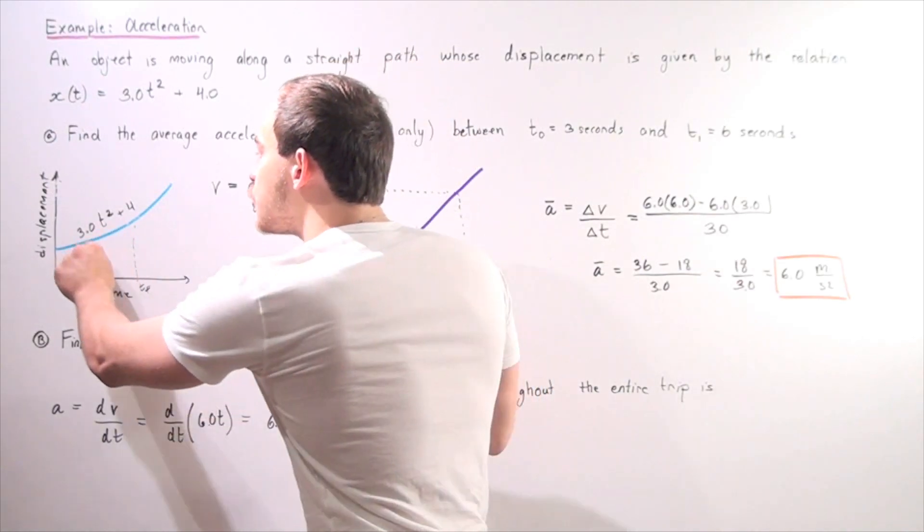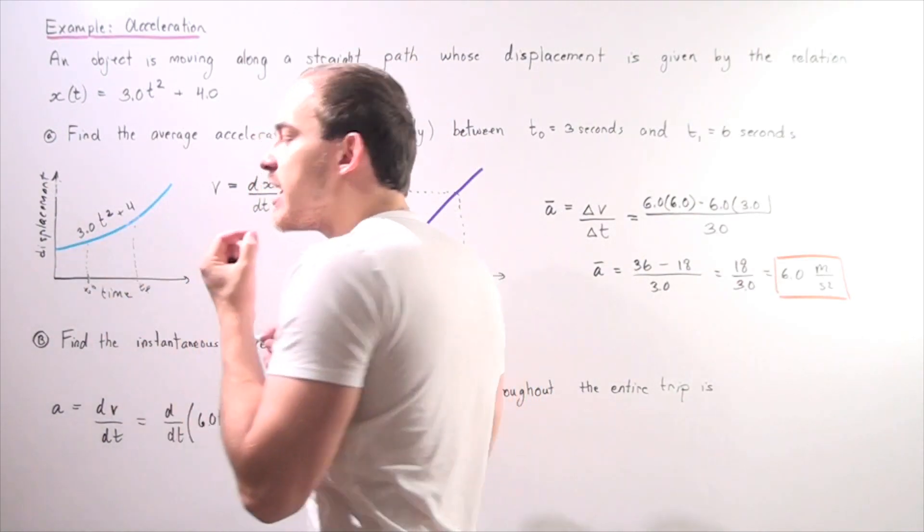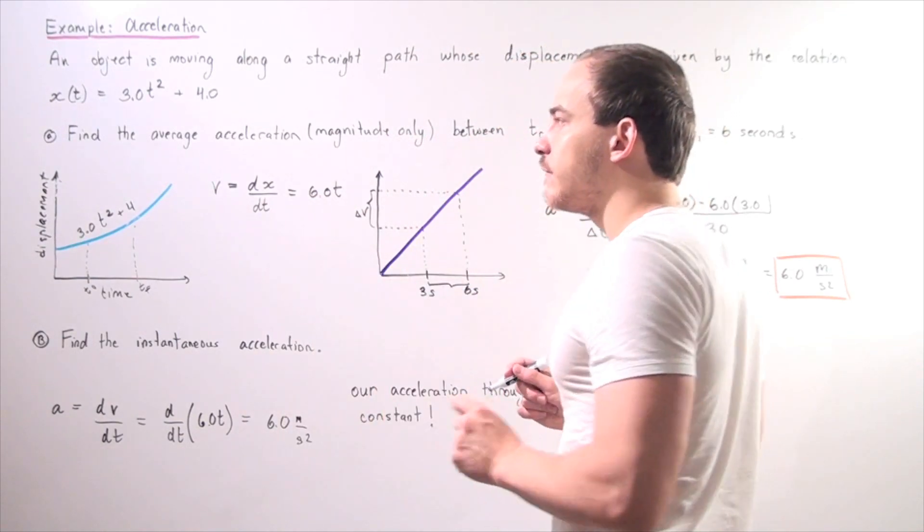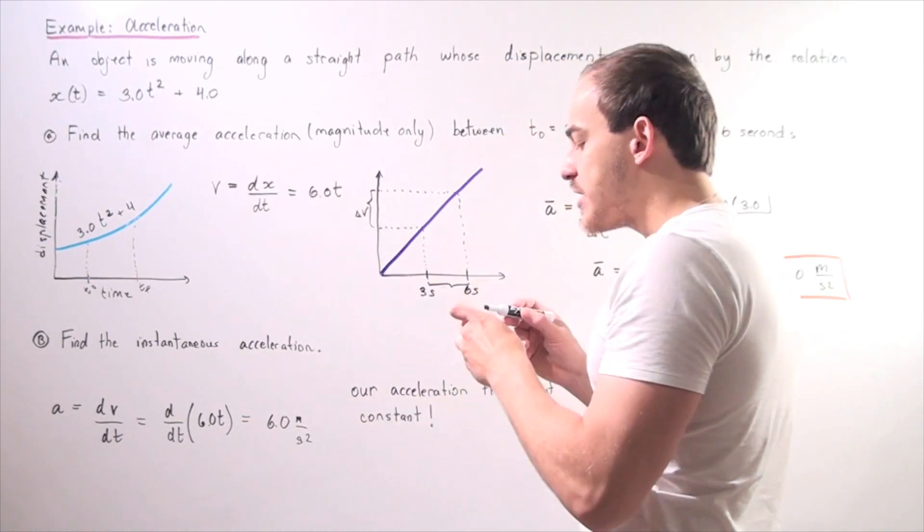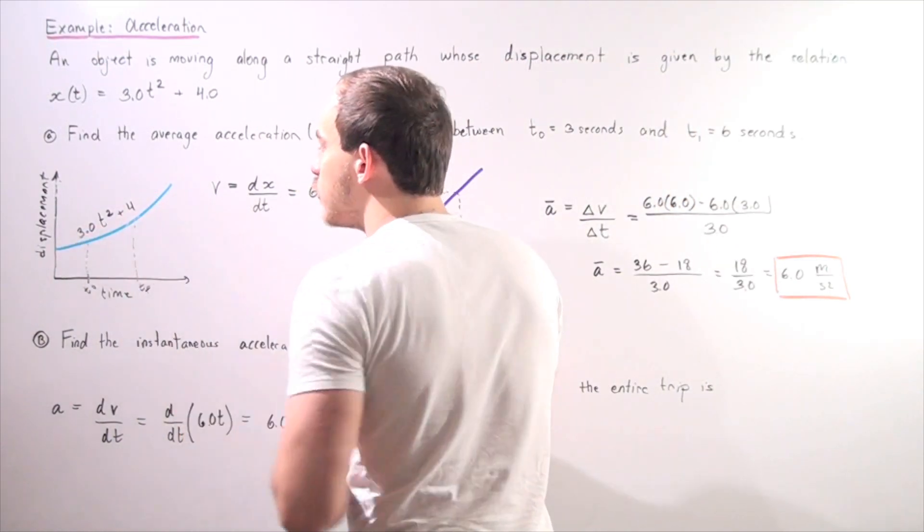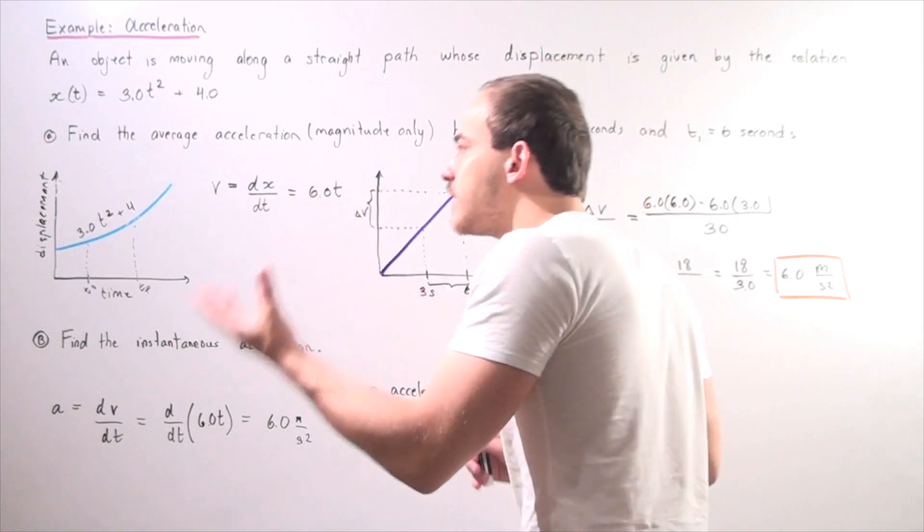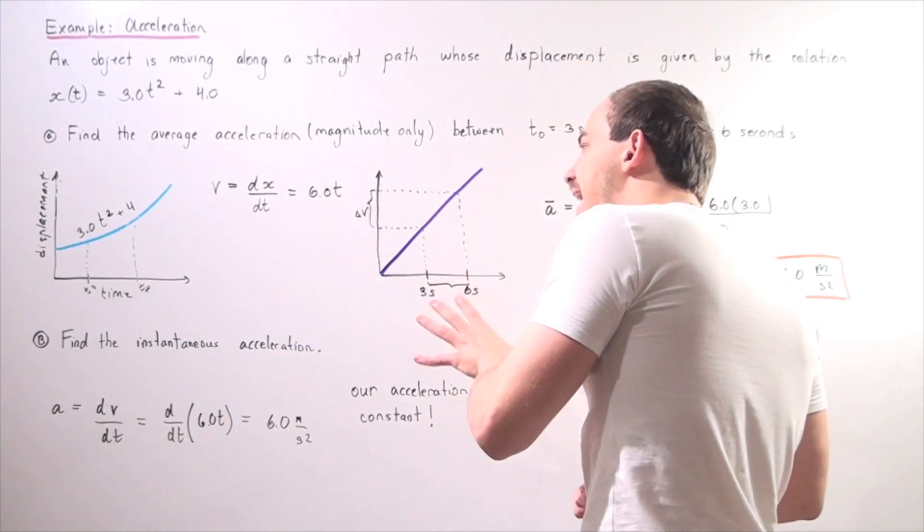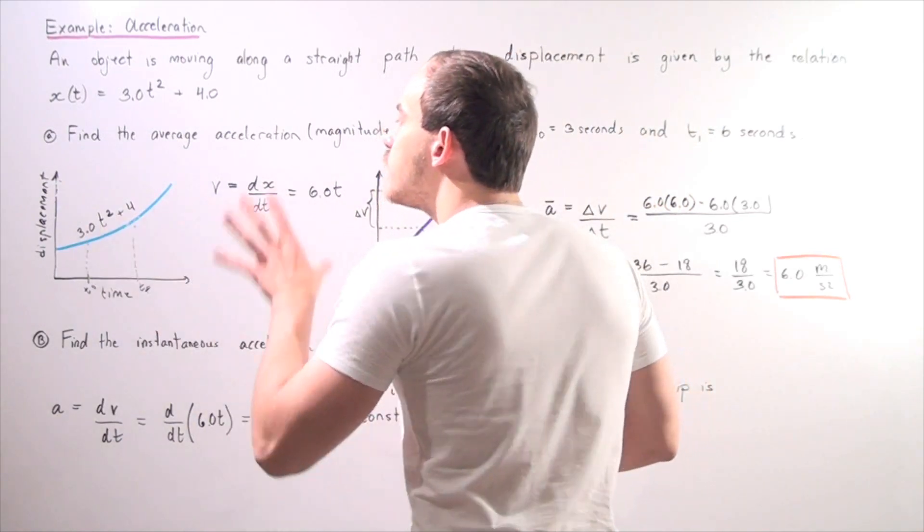And if we find the slope between these two points, that will give us the average velocity. But we're looking for the average acceleration. So before we find the slope between these two points, we have to find the derivative of our displacement function, then plot that and find the slope of that graph.